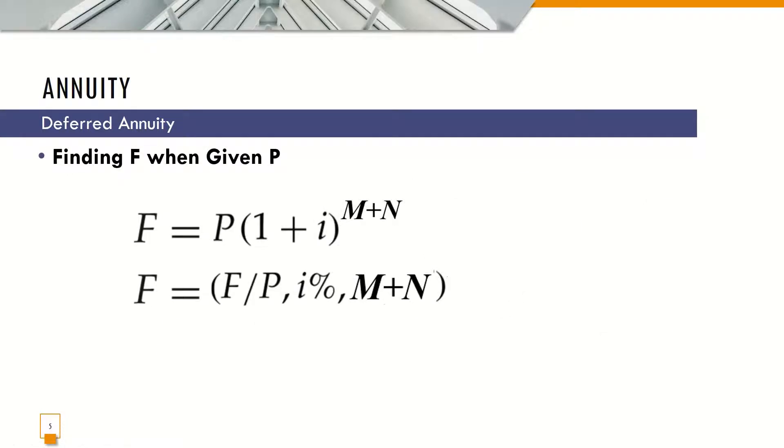And then, finding for F when P is given, F equals P times 1 plus I raised to M plus N, and then F in symbolic form.